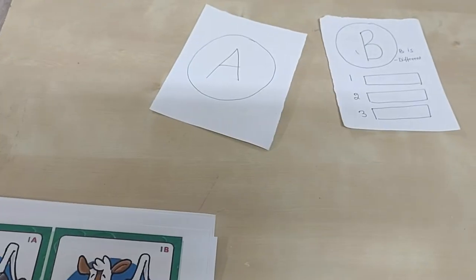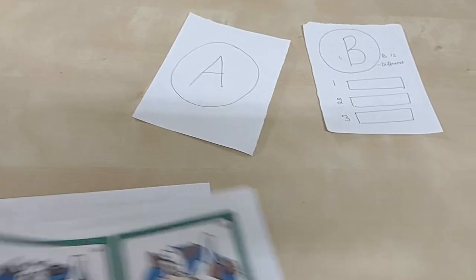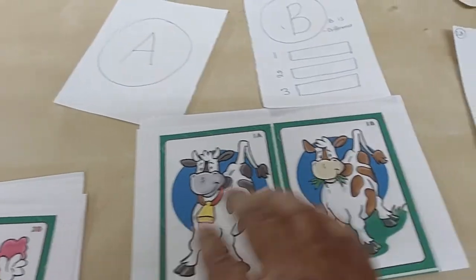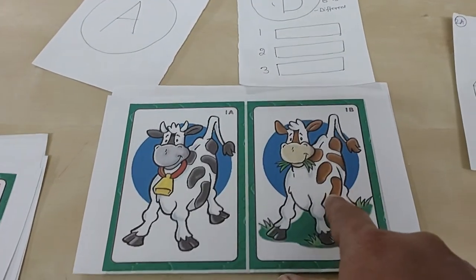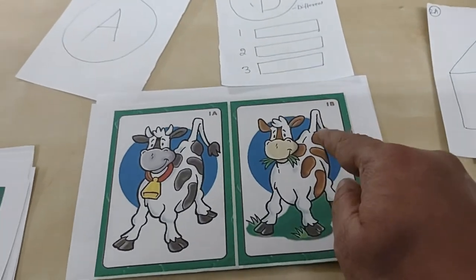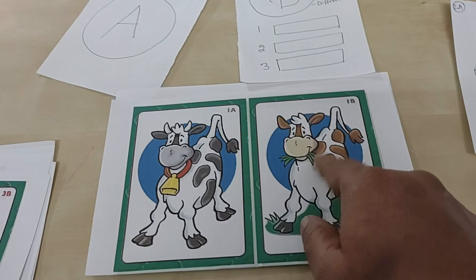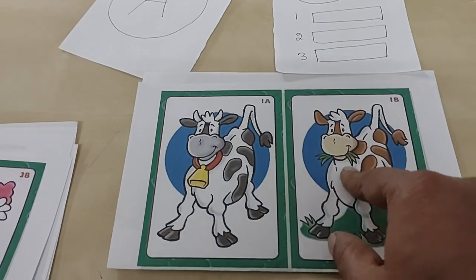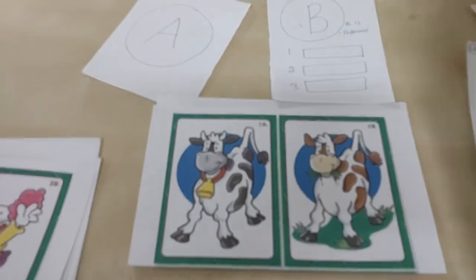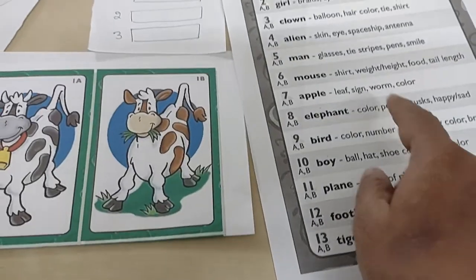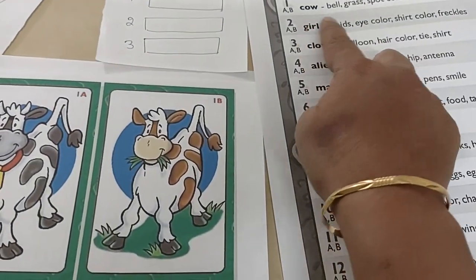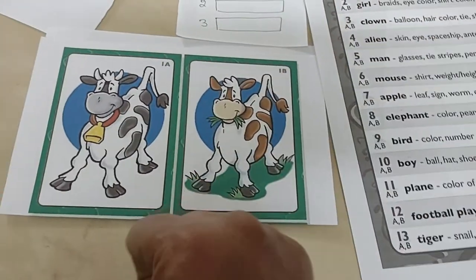When this is done, then you can from Google find out many cards. I took a printout like this. What is in B? The B cow has brown spots, B cow is eating the grass, B cow has no bell. Even for this one I have this help sheet where the child will take the help of this.